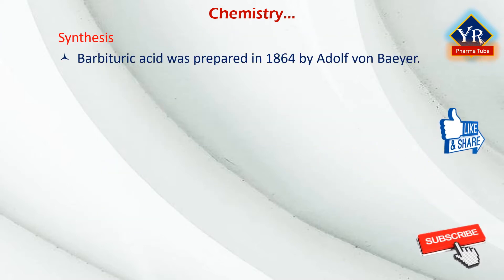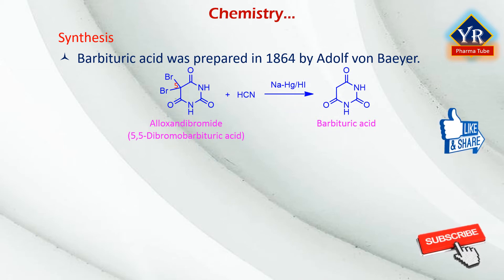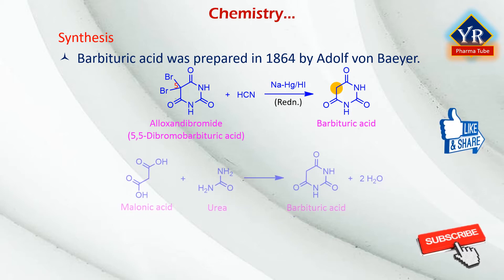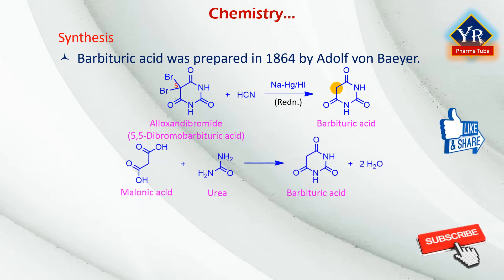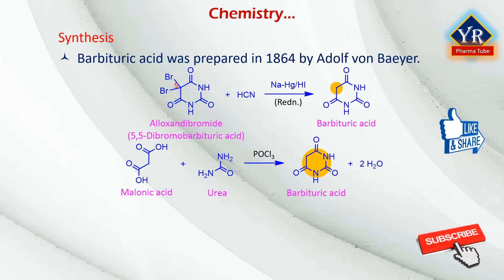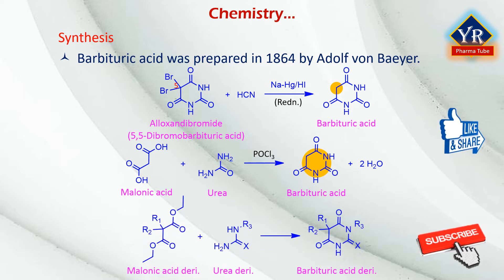Barbituric acid was first prepared by German chemist Adolf von Baeyer in 1864, by reducing alloxan dibromide (now called 5,5-dibromobarbituric acid) with hydrocyanic acid, and later with sodium amalgam and hydrogen iodide. In 1879, French chemist Edouard Grimaux synthesized barbituric acid from malonic acid, urea, and phosphorus oxychloride. Malonic acid has since been replaced by diethyl malonate, as using the ester avoids problems with the acidity of the carboxylic acid. The synthesis involves condensing urea or its derivatives with malonic acid derivatives.